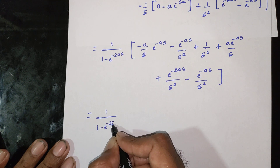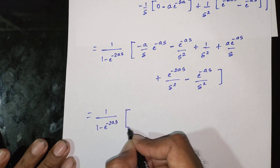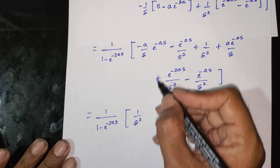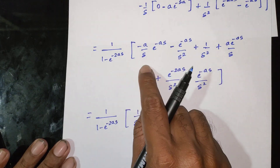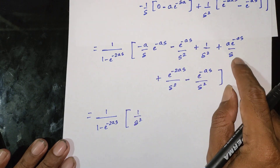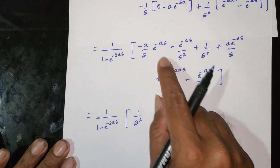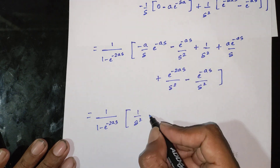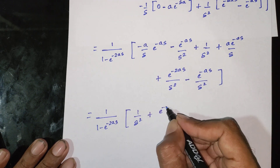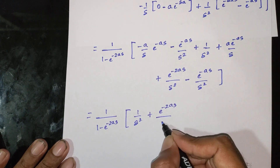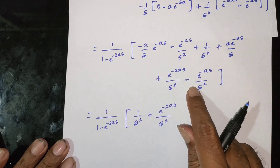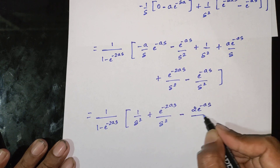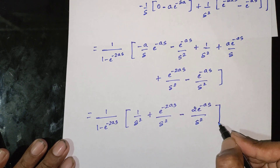Collecting and simplifying all terms, we have 1 by (1 minus e power minus 2as) times 1 by s squared. After cancellations, the numerator becomes: 1 plus e power minus 2as minus 2 times e power minus as, all divided by s squared.